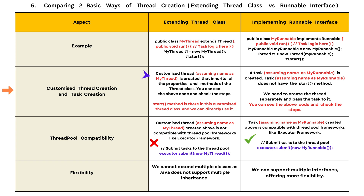The second difference is customized thread creation vs task creation. When we extend the Thread class, a customized thread — assuming the name myThread — is created that inherits all the properties and methods of the Thread class. You can see the code and check the steps. The start method is present in this customized thread class and we can directly use it.